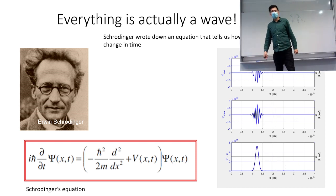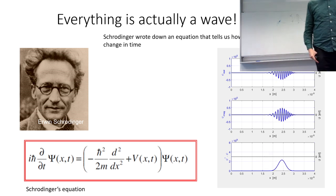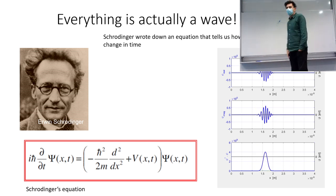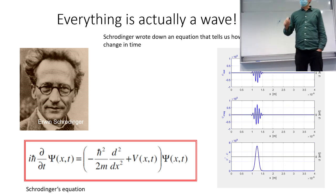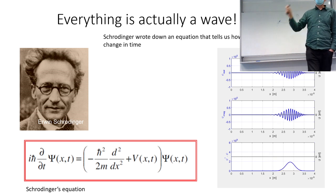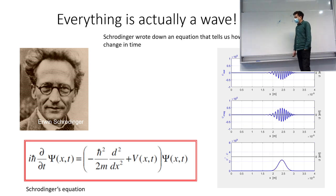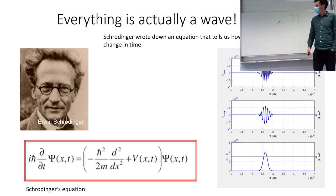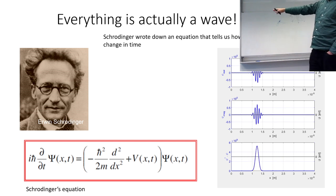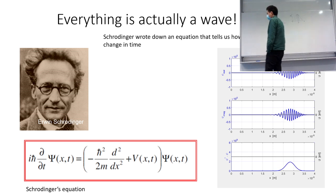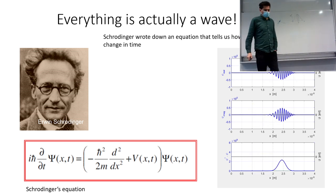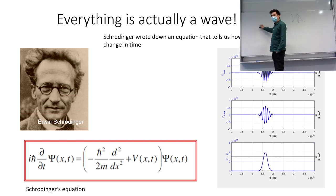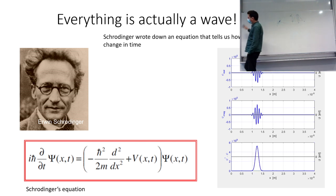The key point that Schrödinger realized is that in classical physics you think of everything as a particle — electrons have some position, some velocity, and that describes the state of the system. But Schrödinger said that actually everything should be described more like a wave. That equation — which we're not going to do in this course, at least not in this form — is basically a time evolution equation. If you know the wave function at some point in time, it will evolve forward in time.